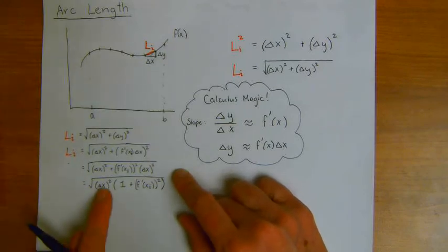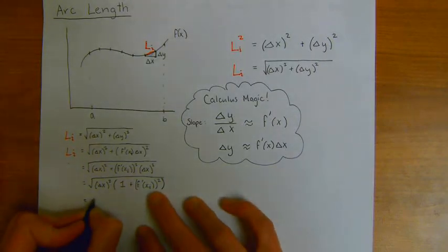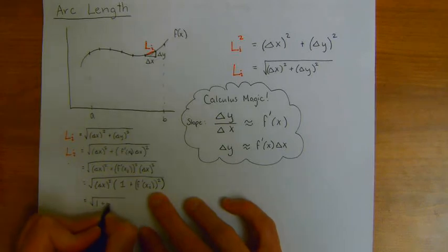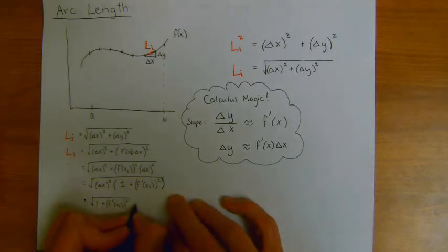And the cool thing now is that the square root of delta x squared just becomes delta x. And I get a formula of the square root of 1 plus the derivative at x sub i squared times delta x.